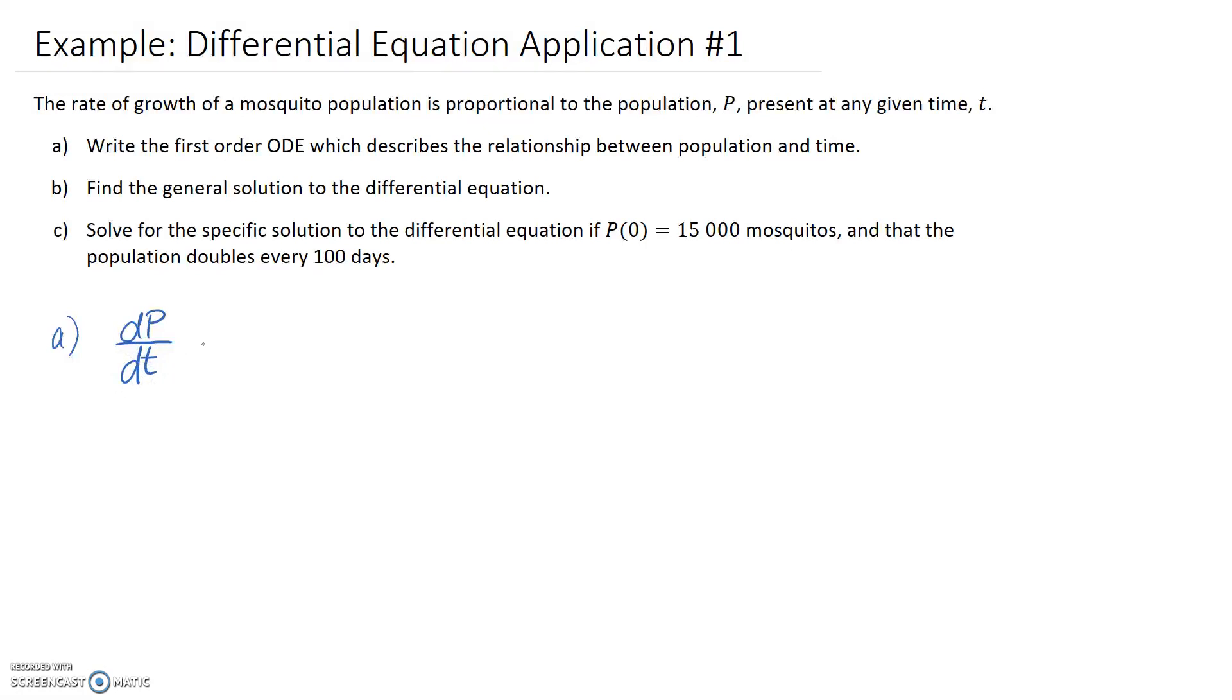We know it's directly proportional to the population, so we can write it as equal to k times P. P is the population and k is a constant of proportionality.